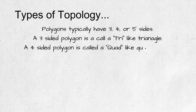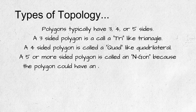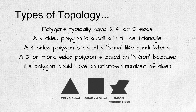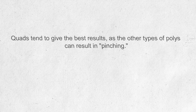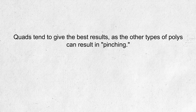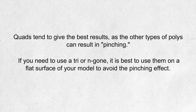A three-sided polygon is called a tri, like triangle. A four-sided polygon is called a quad, like quadrilateral. A five or more sided polygon is called an n-gon. All of those types of polygons can be used to make up a model's topology. However, quads tend to give the best results, as the other types of polygons can result in pinching.